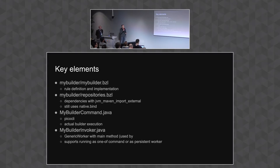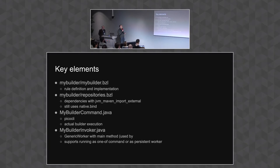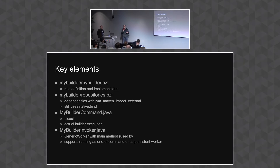There are a few important things I'd like to highlight. We're trying to apply best practices, but we're still learning, so if you see something that you think is wrong, submit a pull request or an issue — we're happy about any feedback. There's a bzl file for the rule definitions of the builder and the implementation. Then we have the repositories bzl file, where we list all the dependencies of the builder. Since most of our builders are written in Java, they need dependencies, and we use rules_jvm_external to fetch those. There's still some native bind in there, and I'm incorporating feedback on that into the template soon.